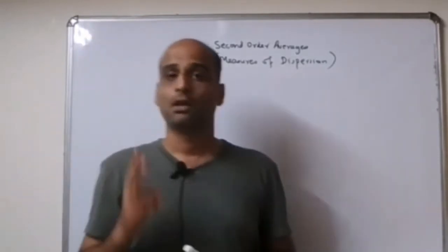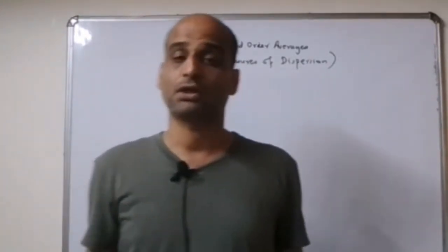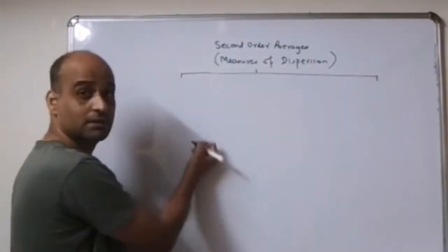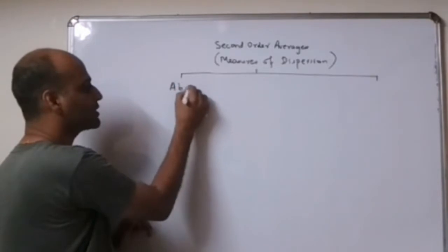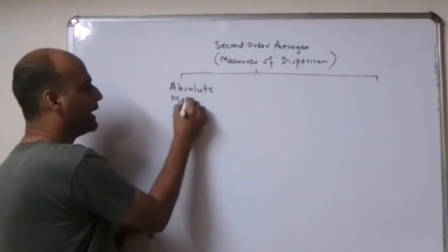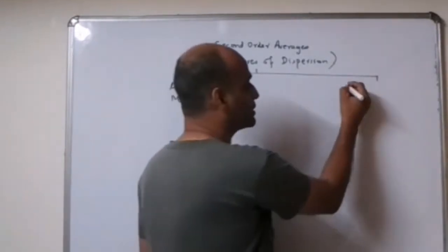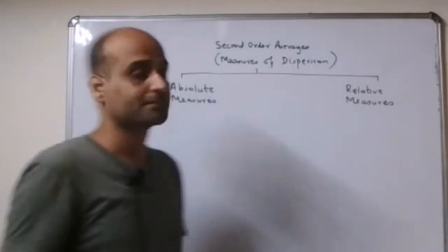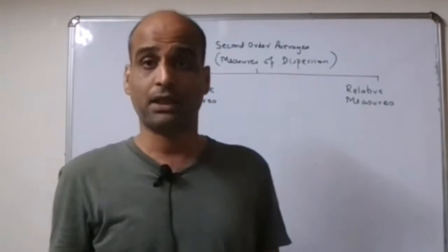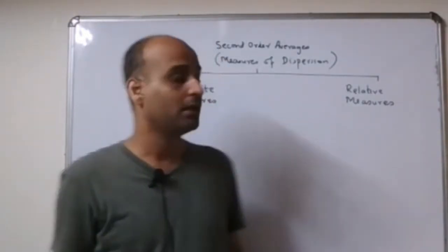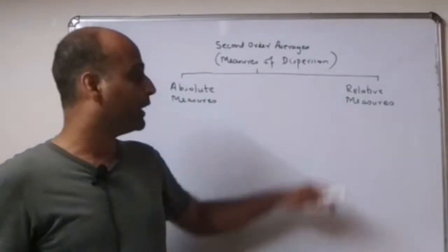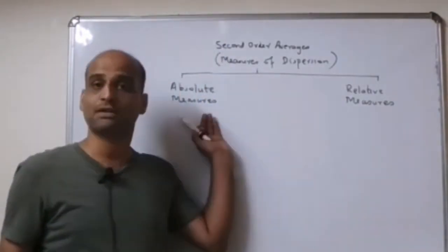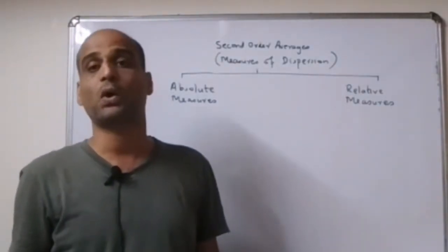Basically measures of dispersion are of two types. The first is the absolute measures and the second one is the relative measures. Absolute measures have units — for example, if the data is given in kilograms, the absolute measure's unit will also be kilograms. Whereas relative measures are expressed as ratios or percentages, so they are unit-free.